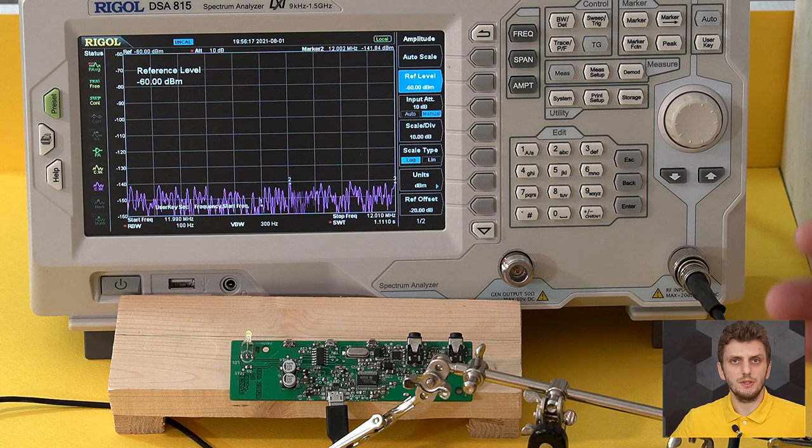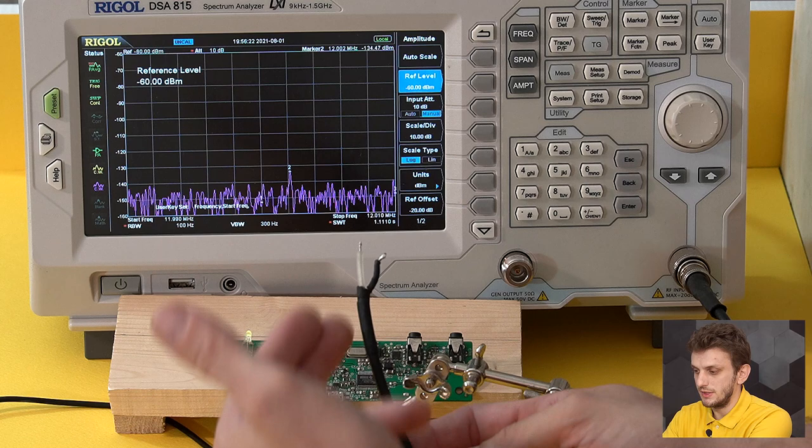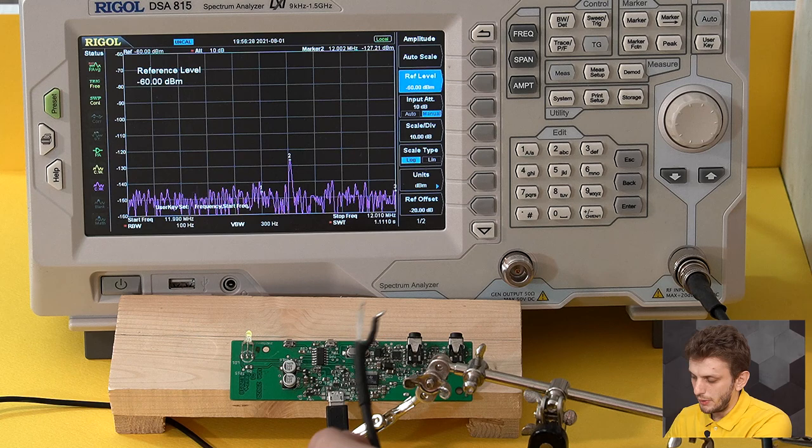You can use proper near-field probes, but for this measurement I found that you can get quite good results even with a bit of coax that has a bit of the central line unshielded. Right now the board is running, and if I bring my coax close to the oscillator we can see a spike appearing.